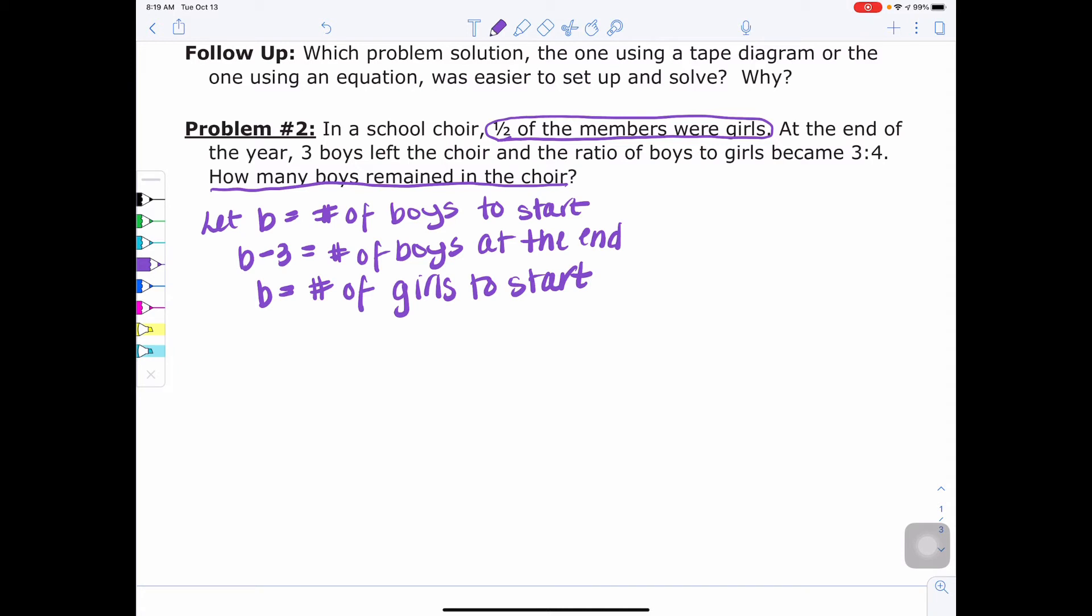So boys to girls. Notice it says boys first, girls second. And then three first and four second. So you want to keep them in that perspective order. So the boys at the end of the year were B minus three. The girls at the end of the year are the same as the girls were at the start. No girls left the choir. So B, really, this is the start and the end. Then on the other side, we have three to four. That was the way the ratio was given to us.